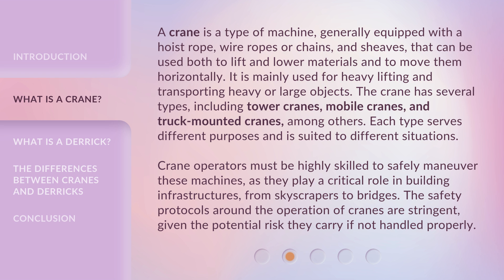A crane is a type of machine, generally equipped with a hoist rope, wire ropes or chains, and sheaves, that can be used both to lift and lower materials and to move them horizontally. It is mainly used for heavy lifting and transporting heavy or large objects. The crane has several types, including tower cranes, mobile cranes, and truck-mounted cranes, among others. Each type serves different purposes and is suited to different situations.